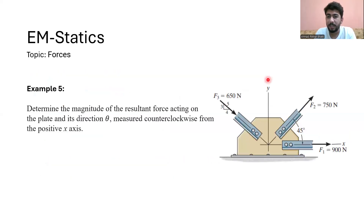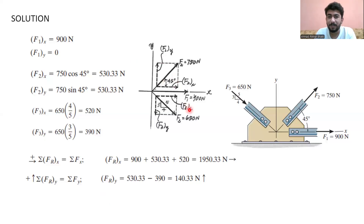In this problem we are given three forces F1, F2, and F3, and we have to find the resultant force of all these forces and also find the direction angle of the resultant force. This is the free body diagram, and first we have to resolve all these forces into perpendicular components, through which we can find the forces in the vertical as well as in the horizontal direction.